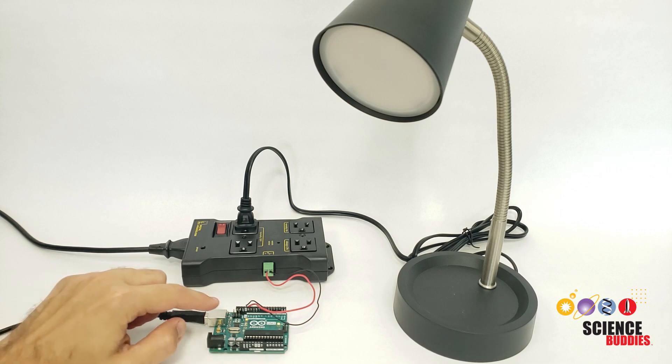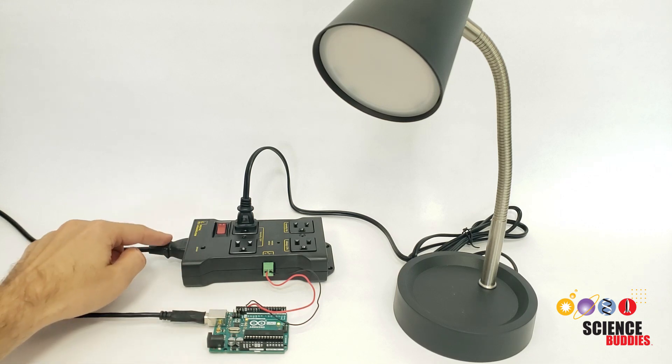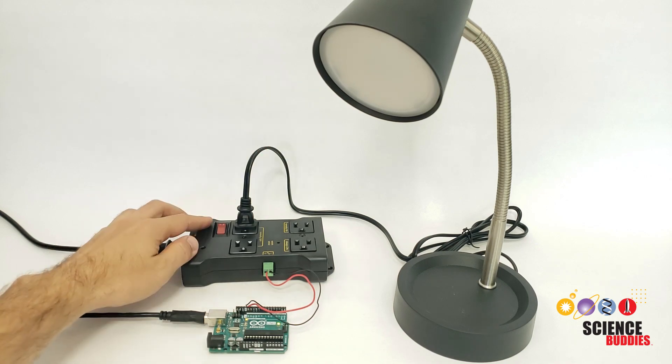Now I have plugged in my Arduino, uploaded my blink example code, plugged in my IoT relay and when I turn the relay on the lamp should turn on and off.